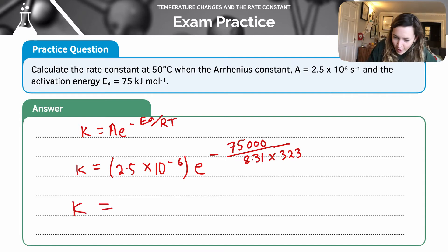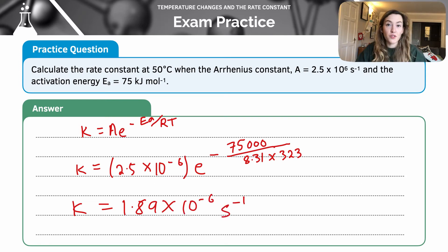And we'll come out with a value of k, which is 1.89 times 10 to the -6. And my units are going to be s to the -1.